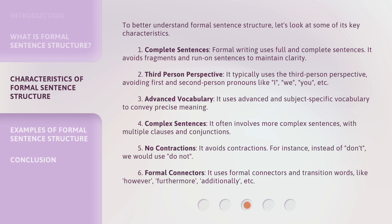To better understand formal sentence structure, let's look at some of its key characteristics. 1. Complete Sentences: Formal writing uses full and complete sentences. It avoids fragments and run-on sentences to maintain clarity. 2. Third-person Perspective: It typically uses the third-person perspective, avoiding first- and second-person pronouns like I, we, you, etc. 3. Advanced Vocabulary: It uses advanced and subject-specific vocabulary to convey precise meaning. 4. Complex Sentences: It often involves more complex sentences, with multiple clauses and conjunctions.